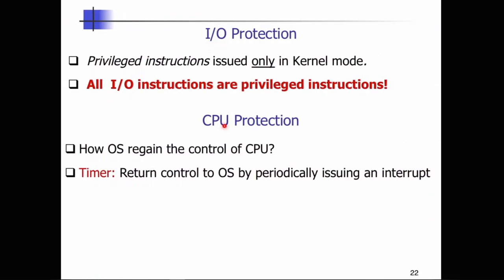How about IO protection and CPU protection? All IO instructions are privileged instructions, so all IO operations happen only in kernel mode. For CPU protection, the main question is: how does the operating system regain control of the CPU? If the CPU is busy executing a user process and the user has bad intentions — say, purposefully writing an infinite loop — the operating system will never regain control. We need some sort of mechanism so that the operating system can periodically regain control of the processor and, if it wishes, give it back to the user process.